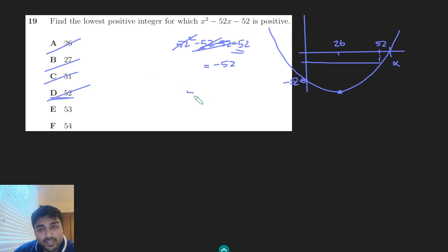Let's try 53. 53 squared minus 52 times 53 minus 52. Well, out of these first two terms, I can just factor out the 53. And I get 53 times 1 minus 52, which is just 53 minus 52, which is 1. And that, of course, is positive. And so our answer here is E.